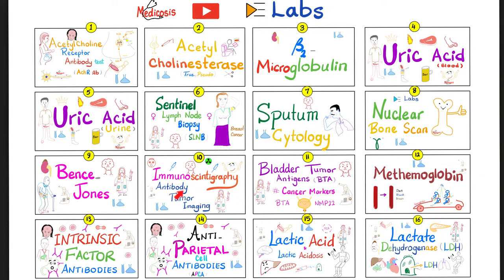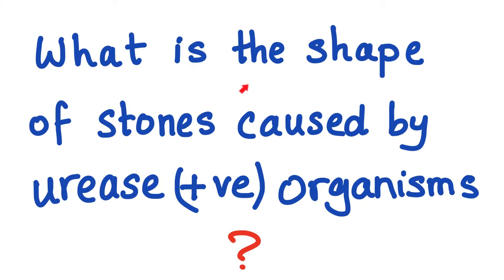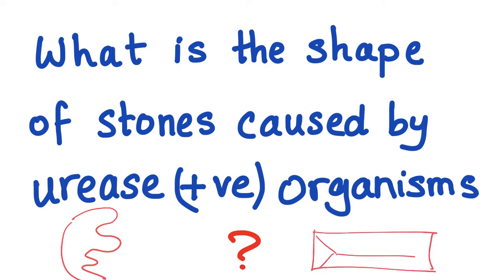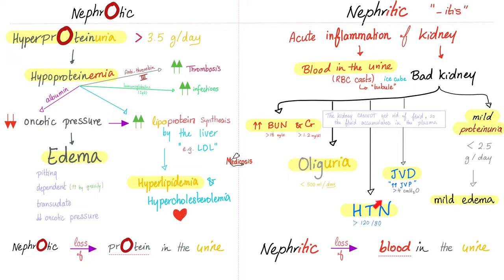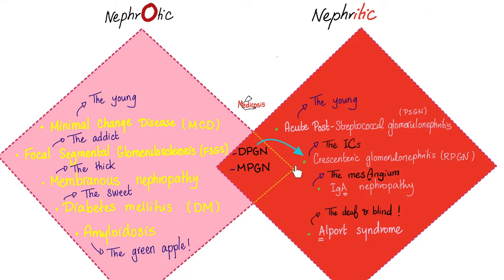Let me start by answering the question of the previous video: what is the shape of the kidney stone caused by a urease-positive organism? The answer is it is a struvite stone, also known as staghorn calculus, which can look like this. However, under the microscope, it has the coffin lid appearance. Normally, urine should not have blood or proteins. If the urine has too many proteins — nephrotic syndrome. Blood — nephritic syndrome. We talked about those in previous videos in my nephrology playlist. This kidney is losing proteins; this kidney is losing blood.